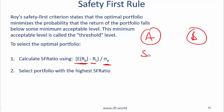So you will come up with a safety first ratio for both and then pick the one that has the higher safety first ratio, because the higher safety first ratio is giving you a higher return per unit of risk.